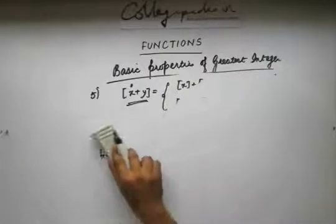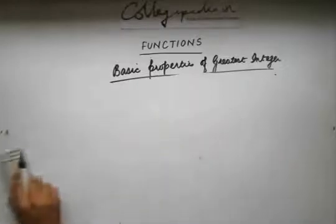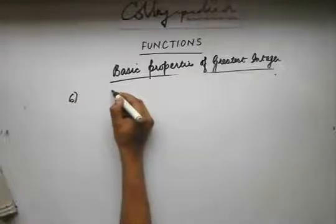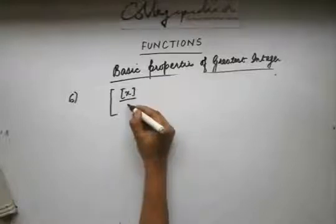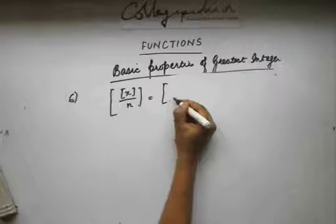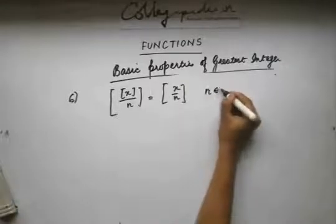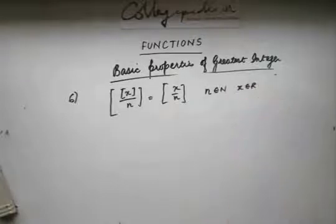Now we move on to the sixth and last important property of the greatest integer function. This last property states that ⌊x/n⌋ = ⌊⌊x⌋/n⌋, where n should be a natural number and x should be a real number. Let's prove this.